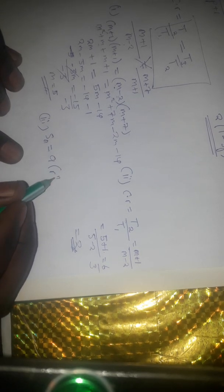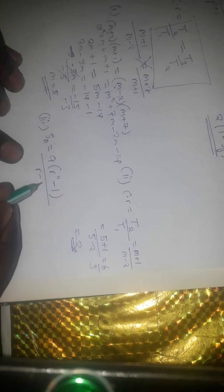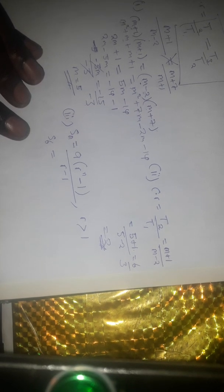Quickly going to the third part, which asks us to find the sum of the first six terms. The formula we use is S equals A times (R to the power N minus 1) divided by (R minus 1). We use this formula when R is greater than 1. Our first term A is m minus 2; since m equals 5, A equals 3. So we substitute: 3 times (2 to the power 6 minus 1) divided by (2 minus 1).